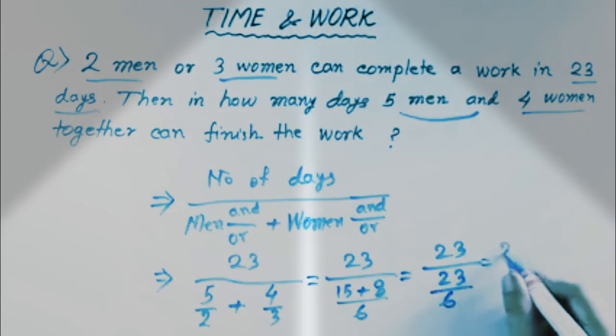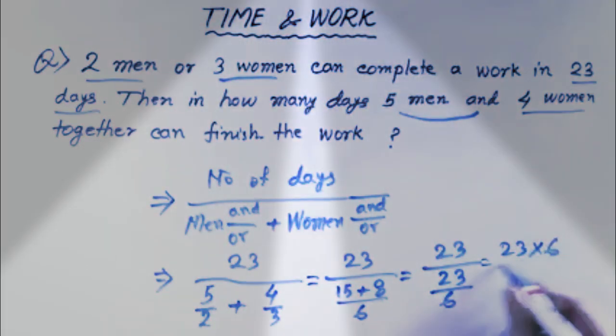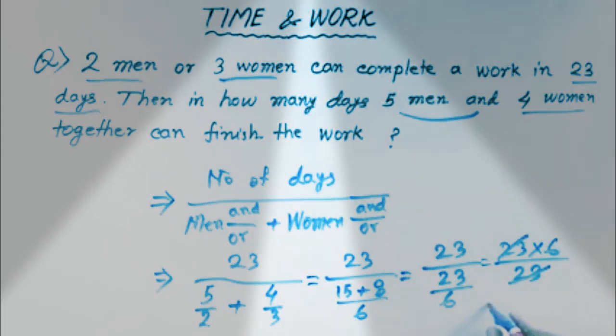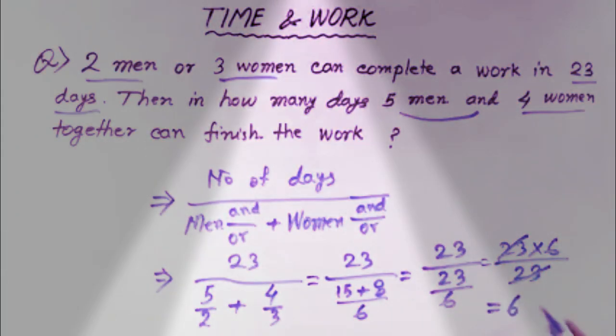Now what do we do? We go to the next step. 23 into 6, when we go to the next step, 23 is down, 23 is cut, and the answer is 6.